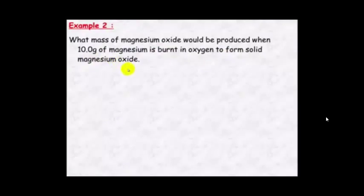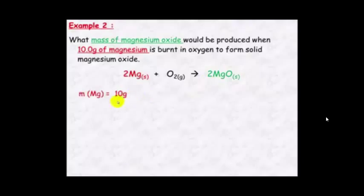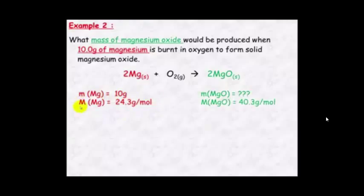First step: write a balanced chemical equation — here it is. Second step: look at the information in the question. It tells you there's 10 grams of magnesium — this is your known amount. It asks you to find the mass of magnesium oxide — so magnesium oxide is your unknown. We know the molar mass of both magnesium and magnesium oxide from the periodic table, and we're trying to find the mass of magnesium oxide.